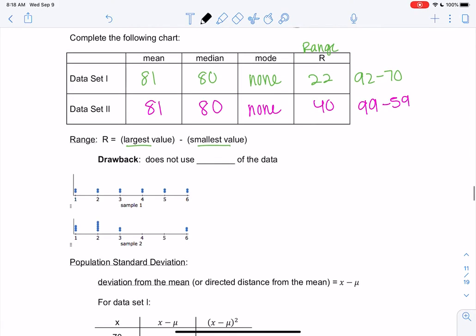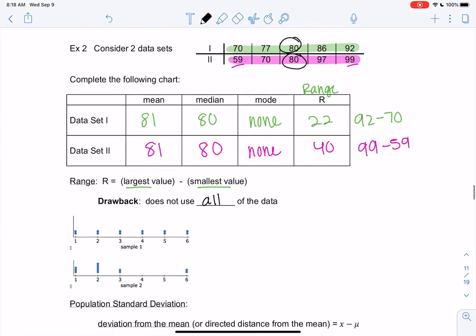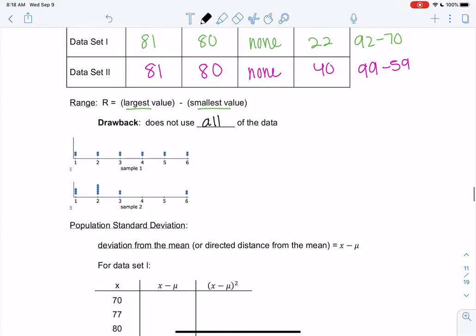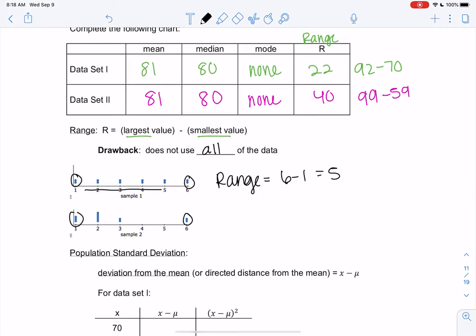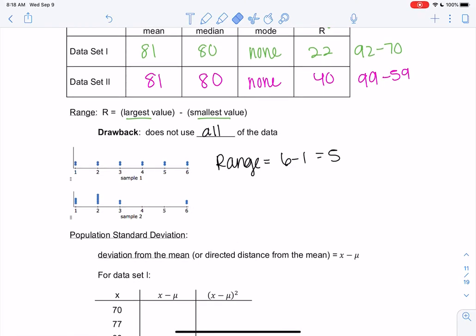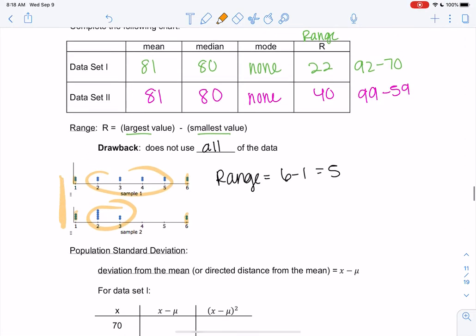There is some drawback about the range: it doesn't use all of the data, right? We only use the largest and the smallest, and we kind of ignore everything in between. So if you look at these two dot plots below, they both have a range of six would be the largest and one would be the smallest. So they'd both be five for both. But they're very different data sets, right? Sample one is really consistent, and sample two, really everything's on the left and only six is over there. So I want to find a different way of describing data sets other than just the range. Because, again, the range is only using the largest and smallest and kind of ignoring what's going on in the middle. And so standard deviation is going to take care of that. That's going to tell me the difference between these two data sets.